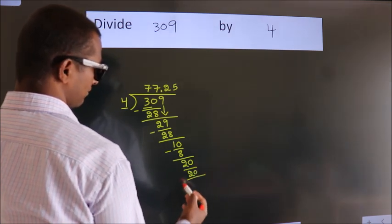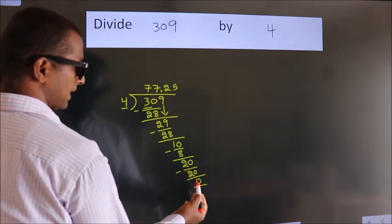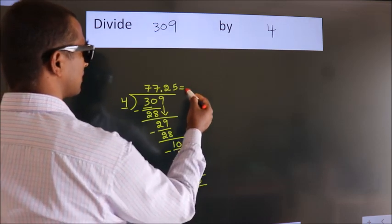Now we subtract. We get 0. We got remainder 0, so this is our quotient.